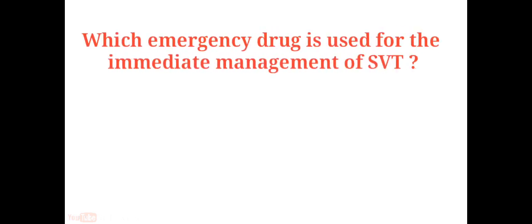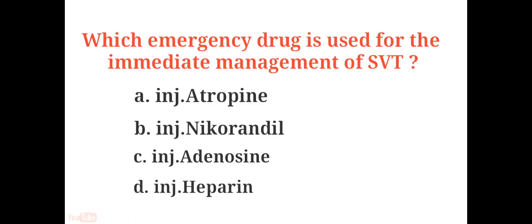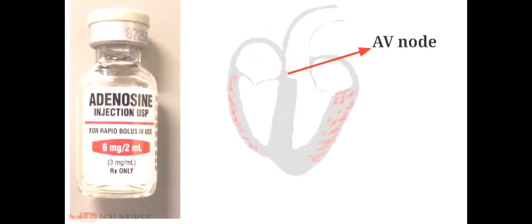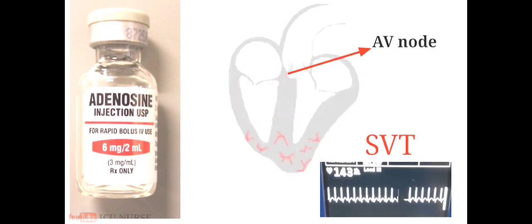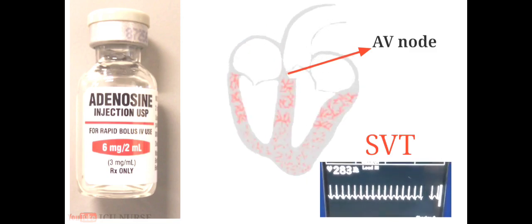Which emergency drug is used for the immediate management of SVT (supraventricular tachycardia)? A. Injection atropine, B. Injection nicorandil, C. Injection adenosine, D. Injection heparin. The answer is C. Injection adenosine. Adenosine slows conduction time through the AV node, can interrupt re-entry pathways, and can restore normal sinus rhythm in patients with paroxysmal supraventricular tachycardia (PSVT), including PSVT associated with Wolf-Parkinson-White syndrome.